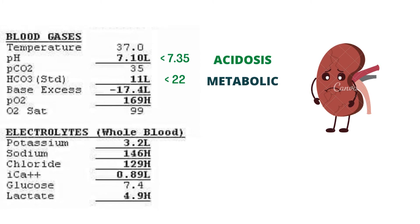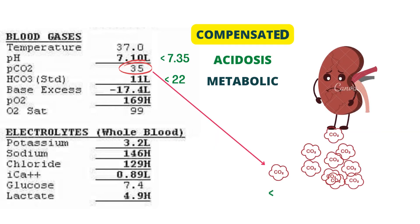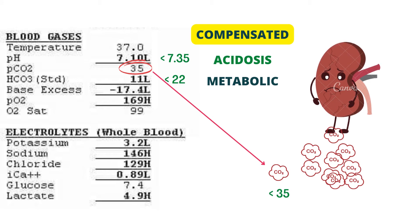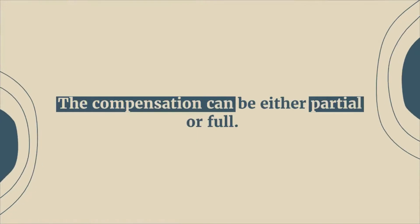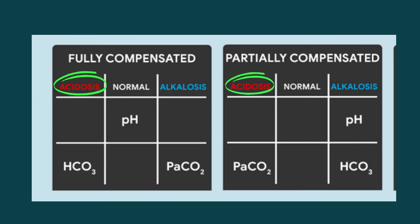Our body compensates for this loss by reducing the level of carbon dioxide in the blood. This condition is called compensated metabolic acidosis, where the partial pressure of carbon dioxide drops below normal and both bicarbonate and pH rise towards normal. The compensation can be either partial or full. If the body is able to maintain the pH within normal range, it will be called fully compensated metabolic acidosis; or if it fails to regulate pH within normal range, it will be partially compensated metabolic acidosis.